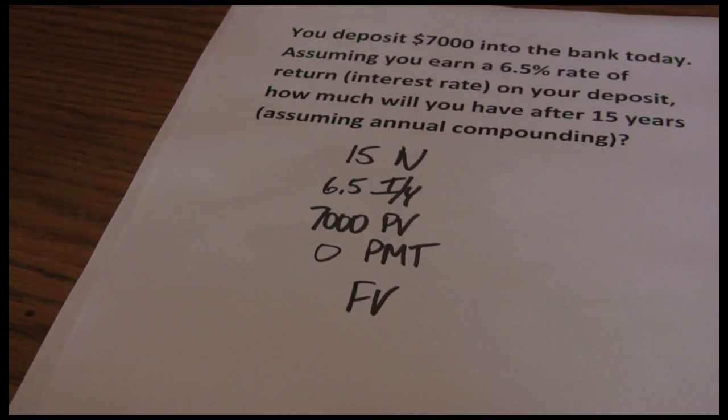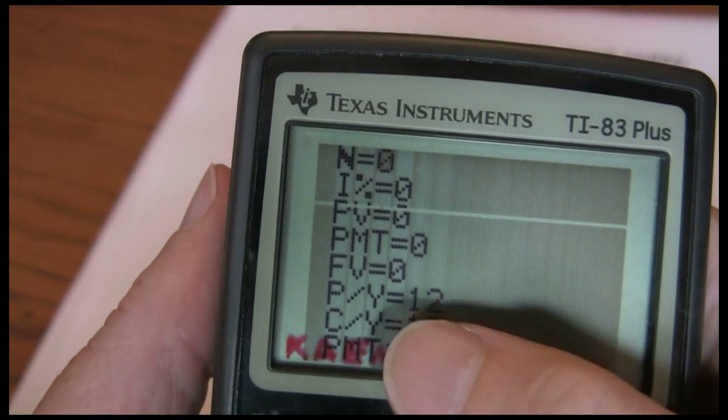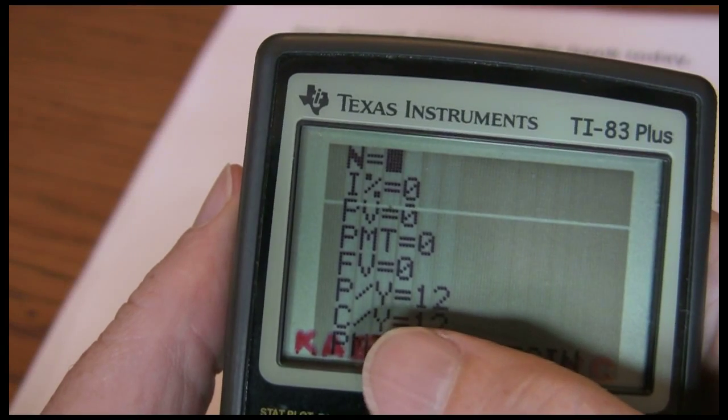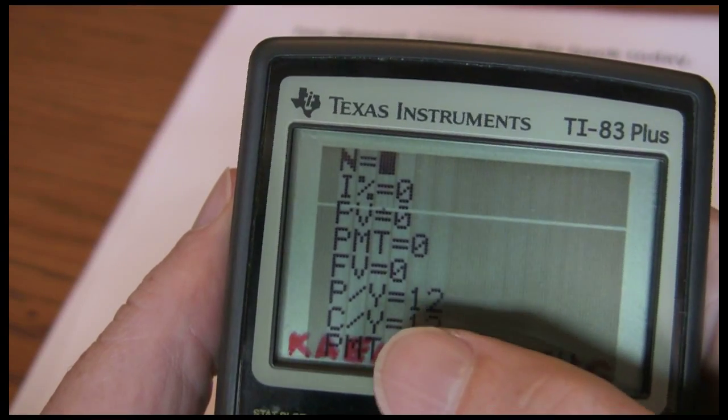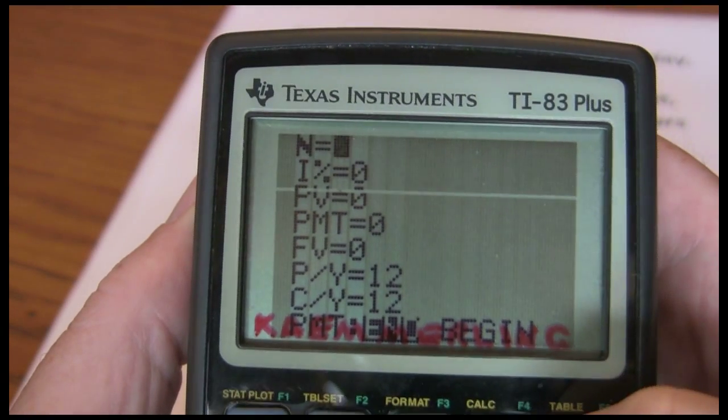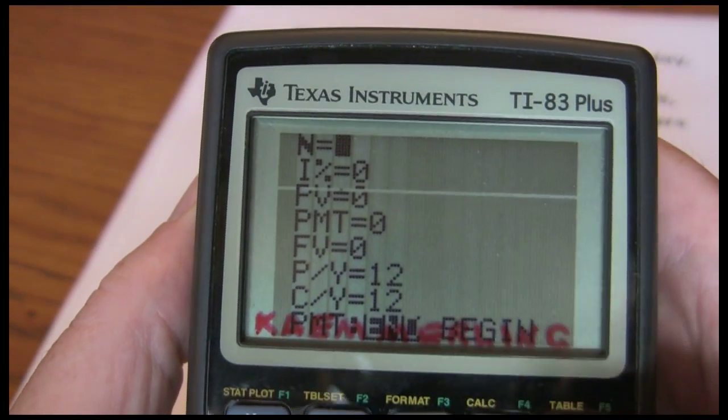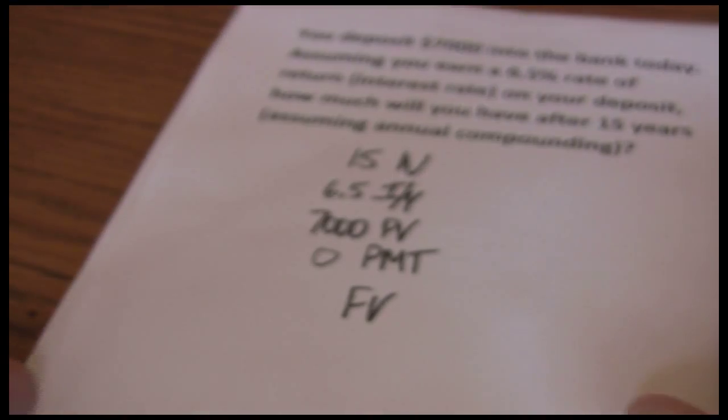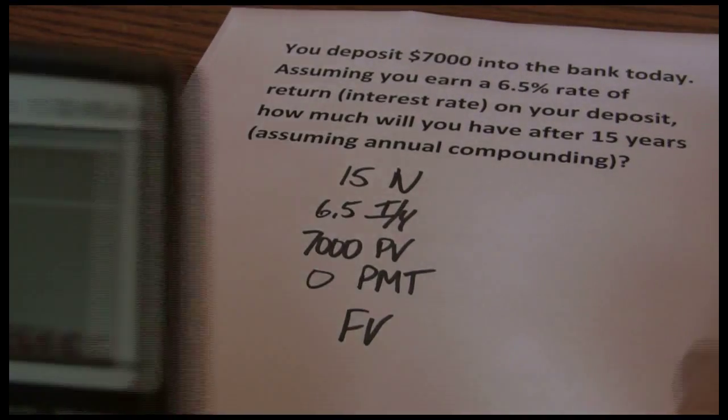Now we just need to put this into our financial calculator. Before I start, I want to point out that the on screen solver in the TI-83 and TI-84 has the periods per year and the end or beginning of period payments set right on that screen. Our periods per year, because we're assuming annual compounding in this problem, should be 1.